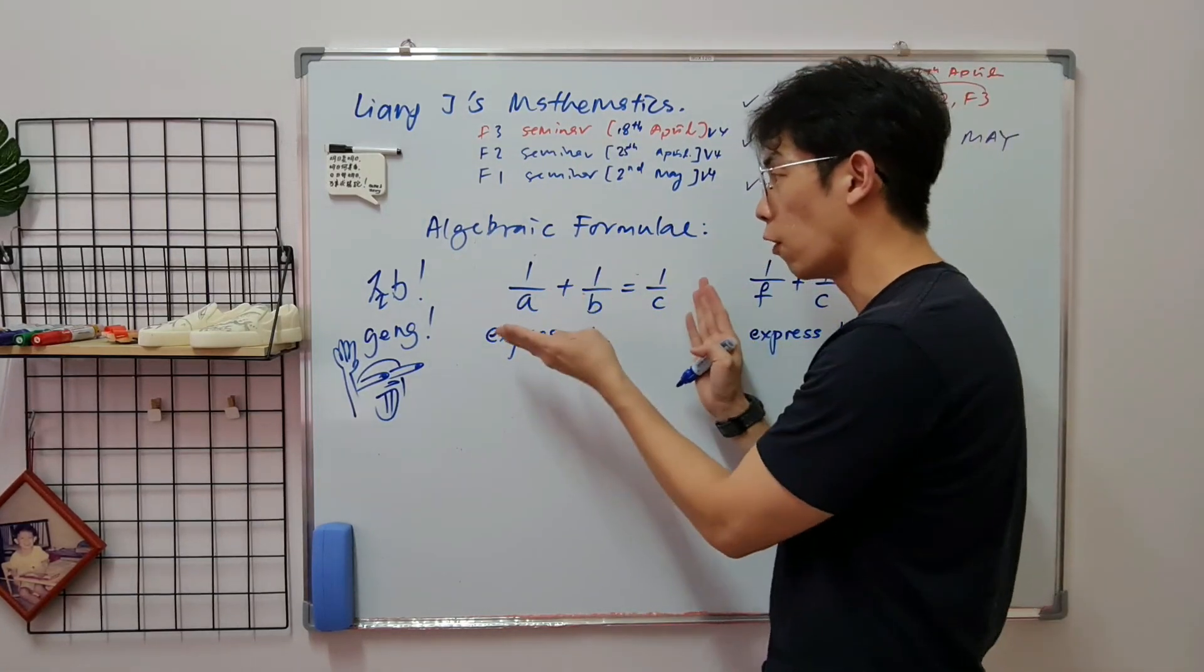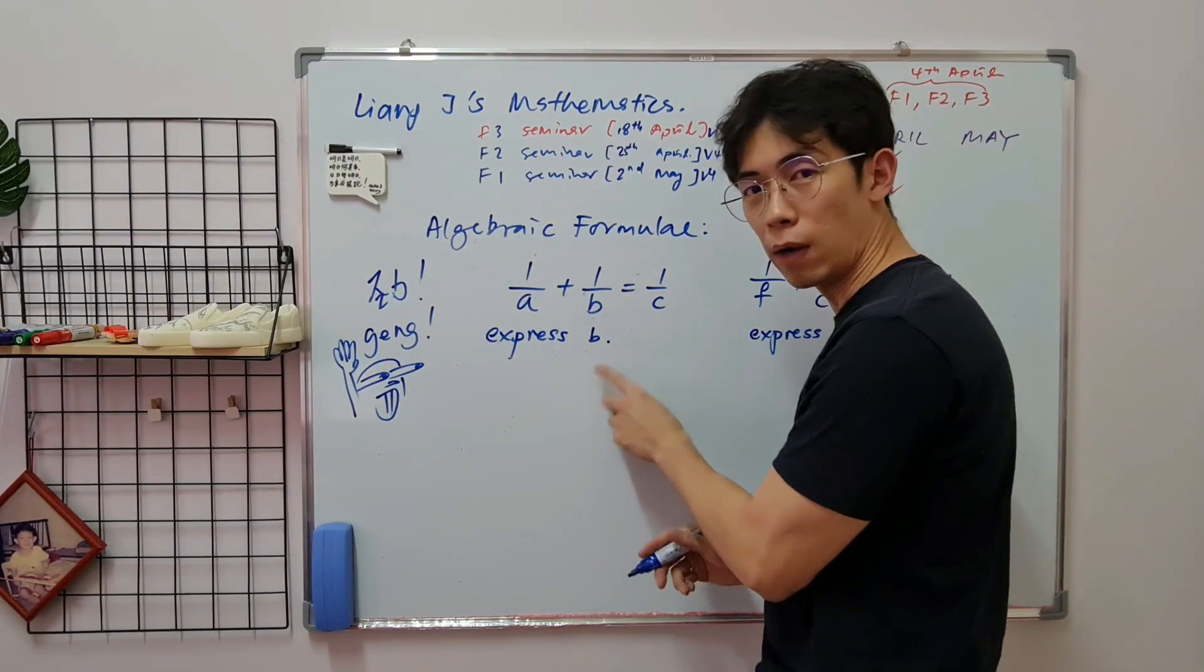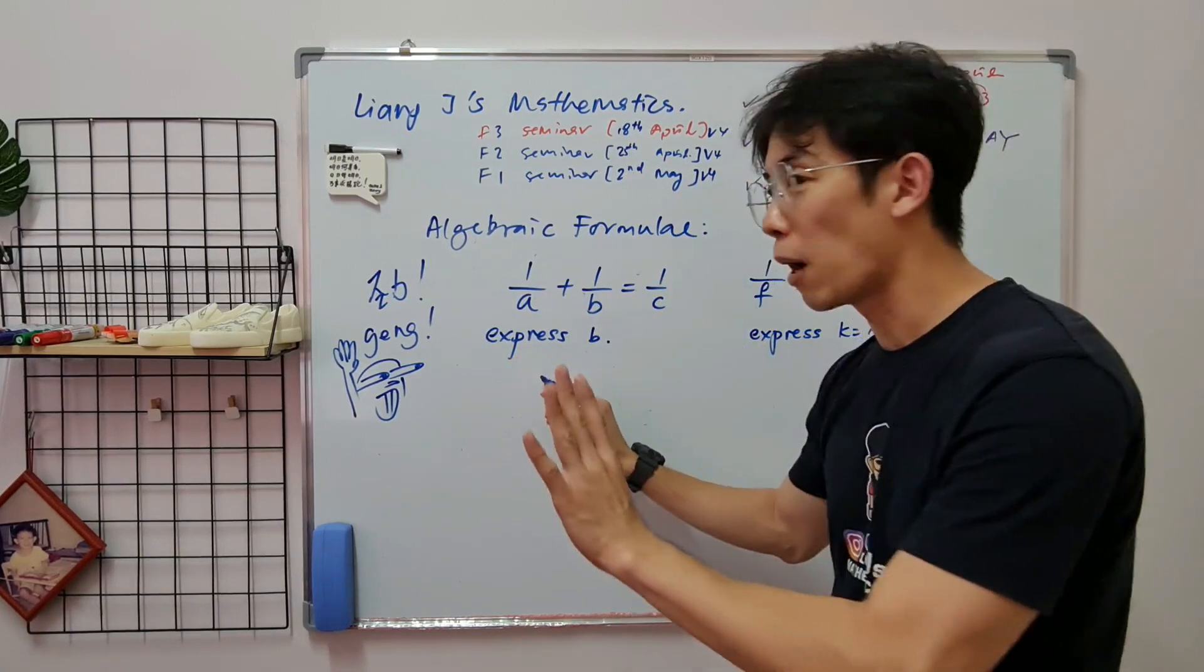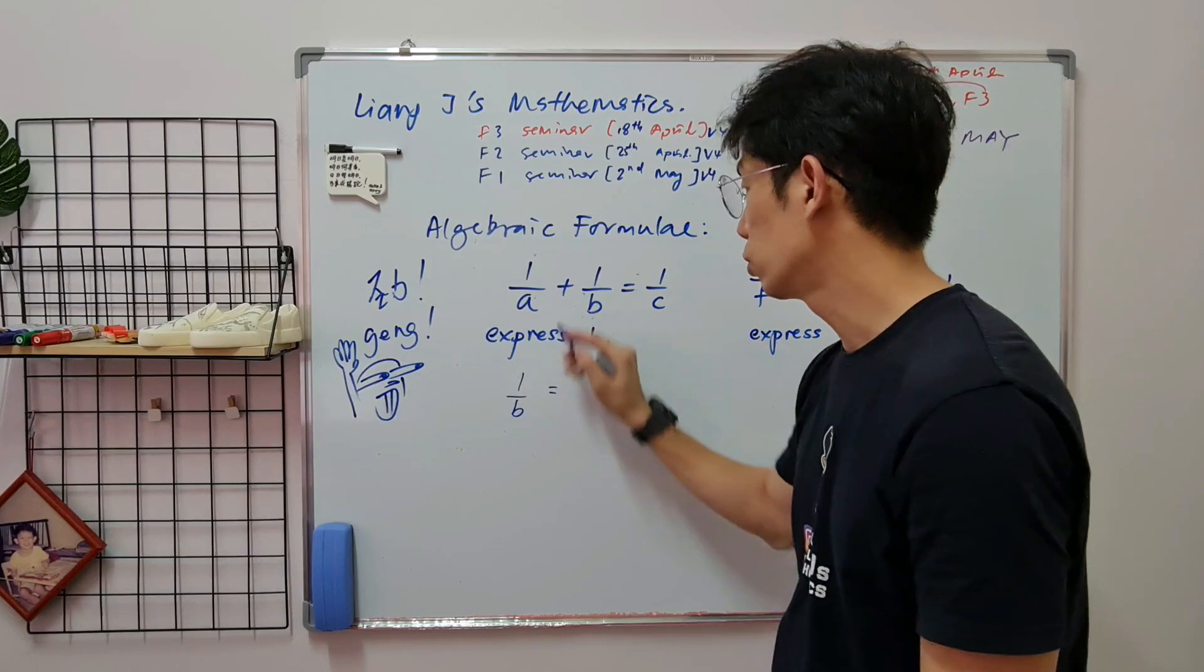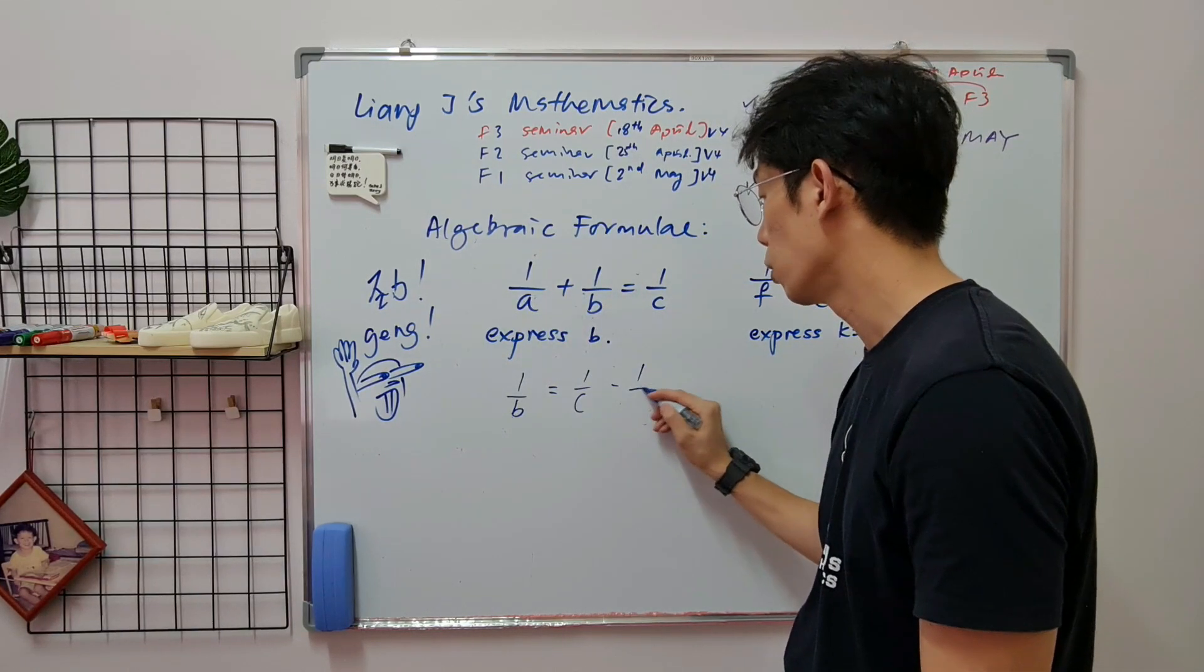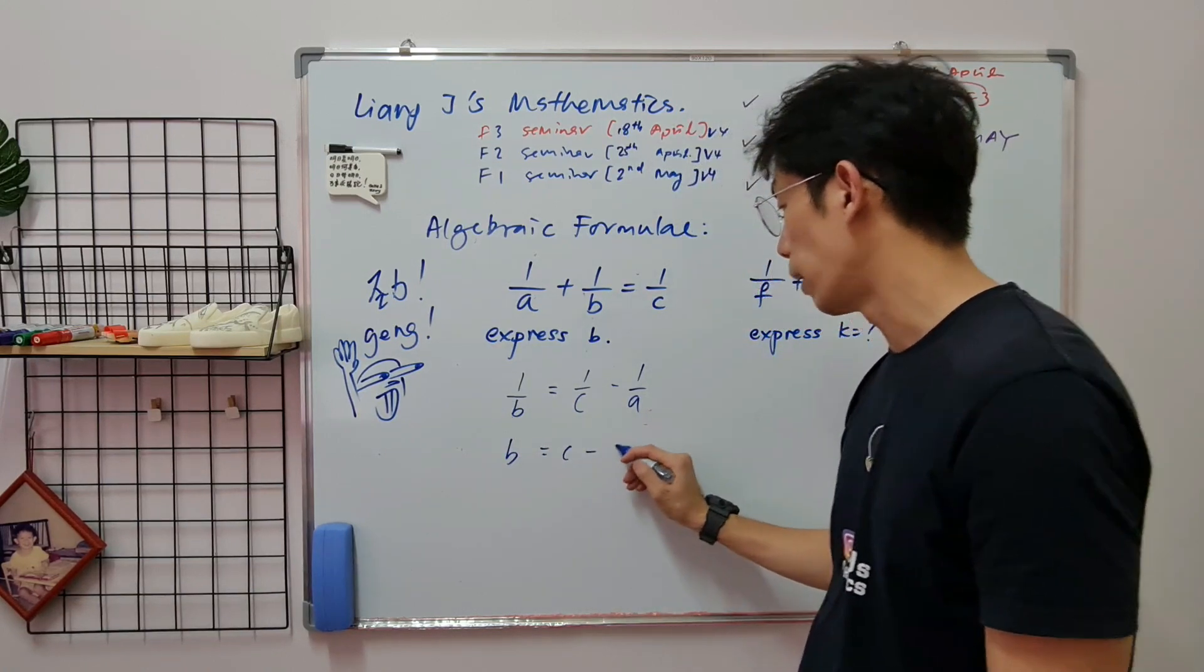Algebraic formula is like they give you a formula, you have to rearrange into what they want. So you're going to get B, right? So you want to get B, you're going to move irrelevant things. So this is the common mistake: 1 over B equals to this whole fraction you bring there, 1 over C minus 1 over A. B equals to C minus A.